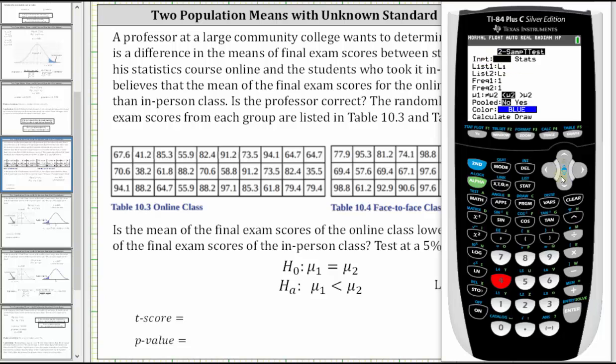The input is data. List one is L1, list two is L2. We are not using a frequency table, and therefore we enter one for frequency one and one for frequency two. We're testing whether μ₁ is less than μ₂. We select less than μ₂ here in the middle. For pooled we select no, arrow down to calculate, and press enter.